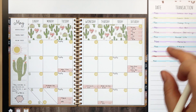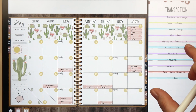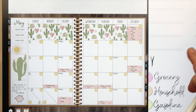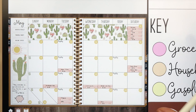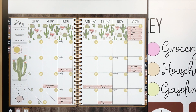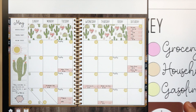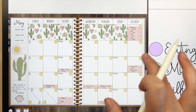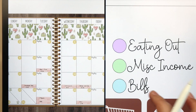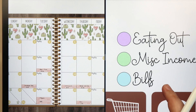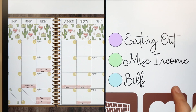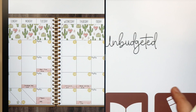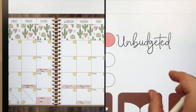I like to color code my transactions. Down here I've got my key: anything in pink is grocery, orange is household, yellow is gas, purple is eating out, green is miscellaneous income, blue is bills, and red is unbudgeted.